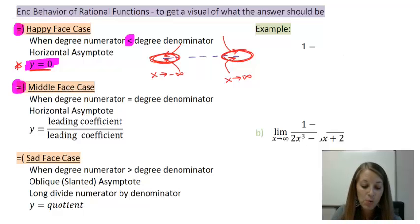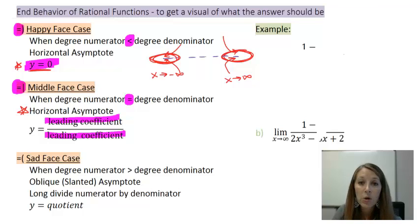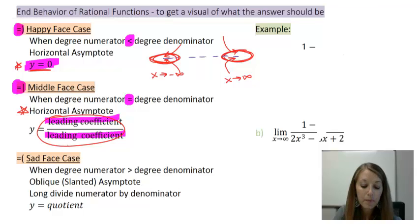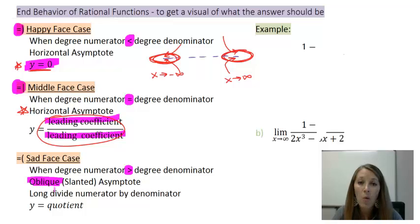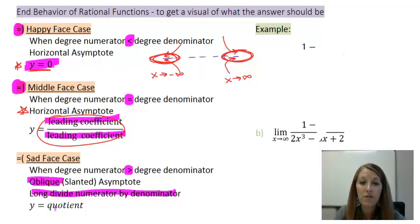The middle face case is when the degrees are equal. You look at the leading coefficient of the numerator divided by the leading coefficient of the denominator — that also gives you a horizontal asymptote, which gives you your infinite limits from both directions. In sad face case, when the numerator degree is greater than the denominator degree, we get an oblique asymptote. We had to long divide the numerator by the denominator to get an equation to graph, and then graph it to see what our end behavior is going to be.